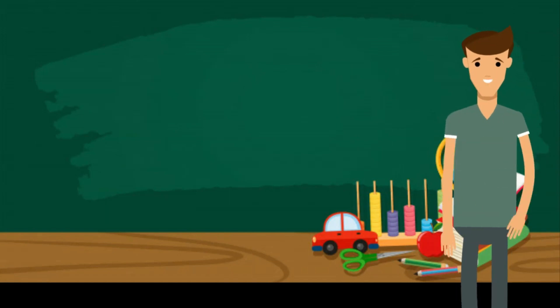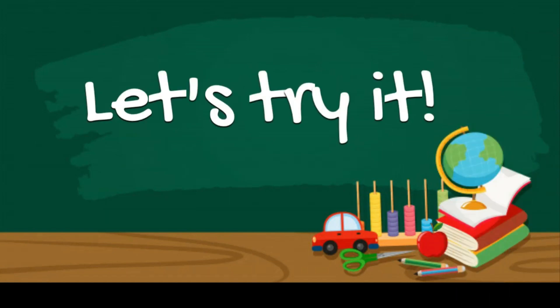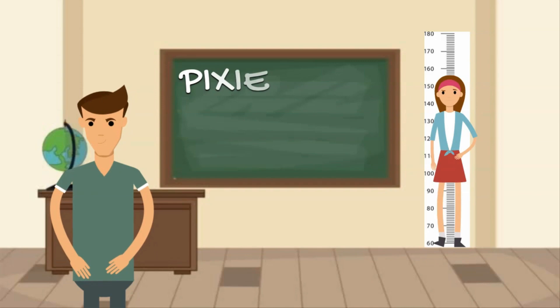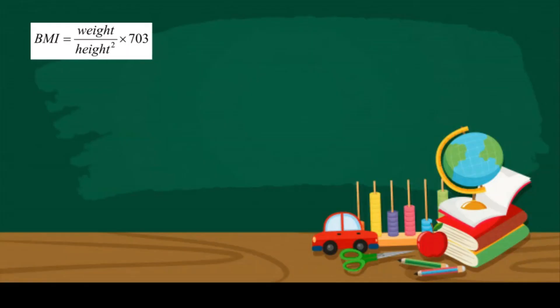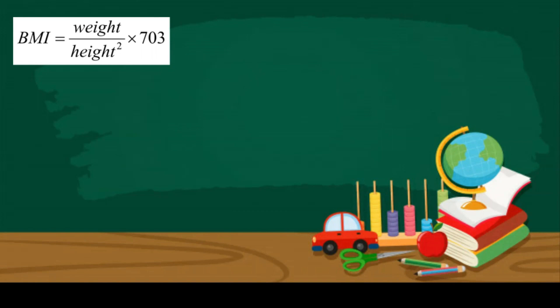Let's try it. Let's say Pixie has a height of 73 inches and weighs 160 pounds. Let's put it in an equation. BMI is equal to weight divided by height squared times 703.